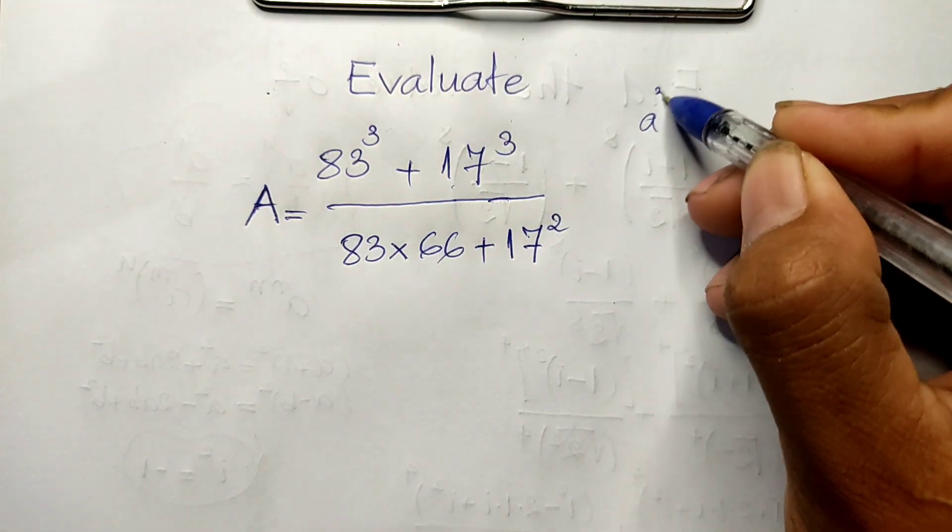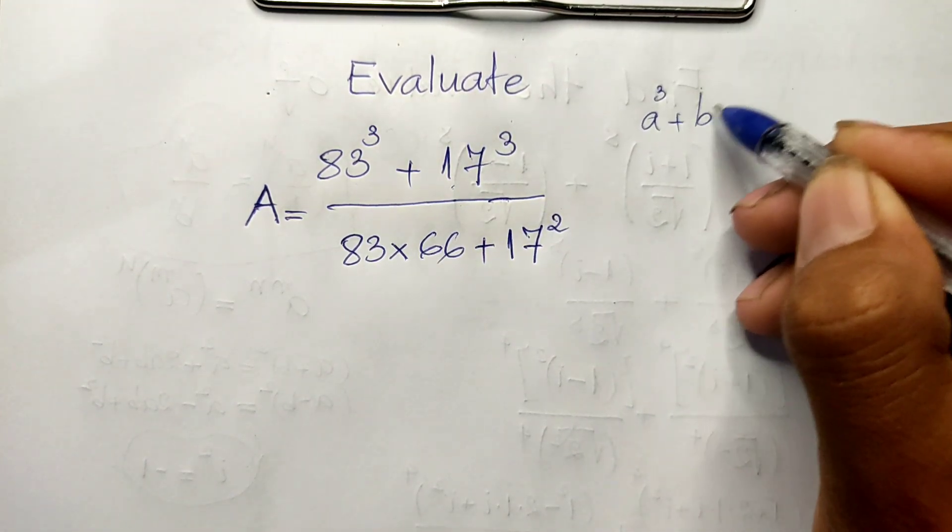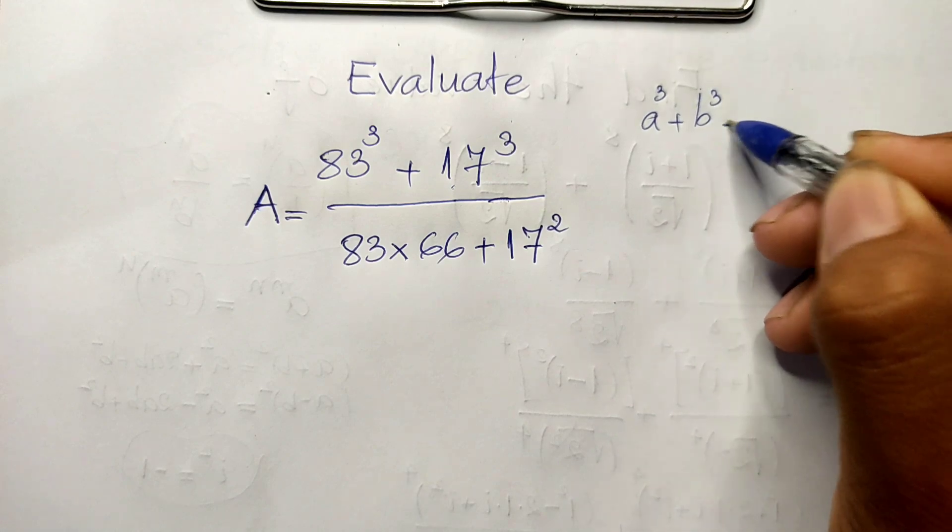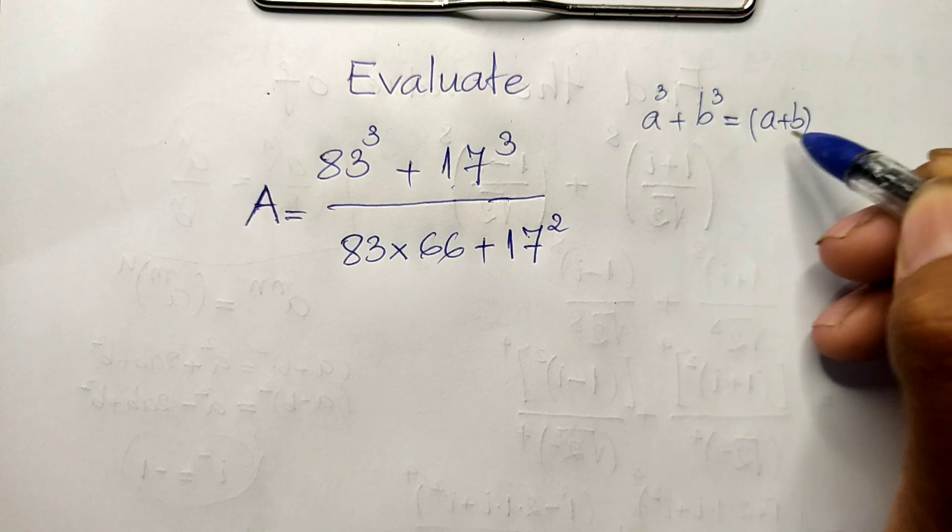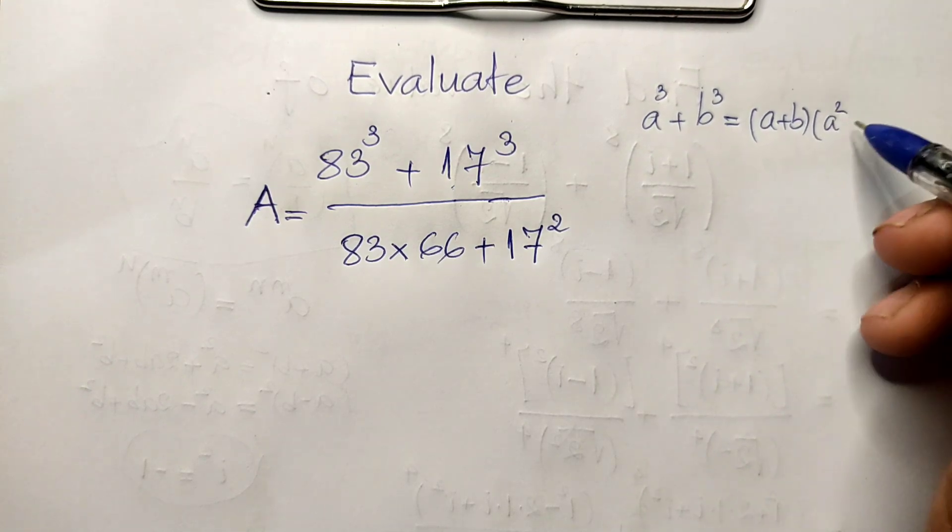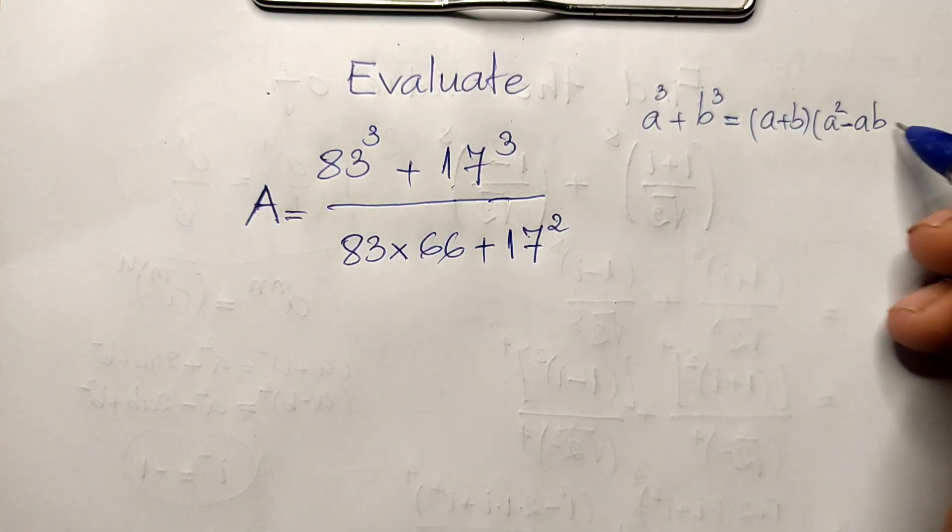The formula is: a to the power of 3 plus b to the power of 3 equals (a plus b) multiplied by (a squared minus ab plus b squared).